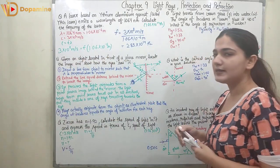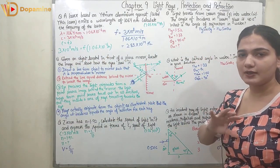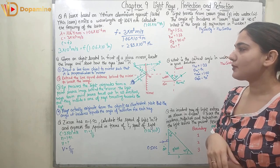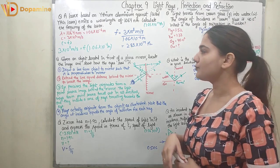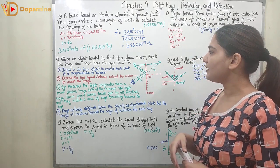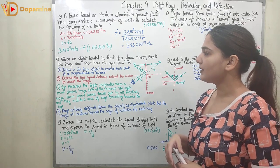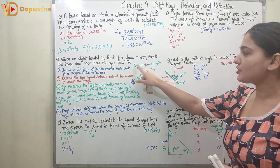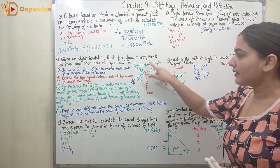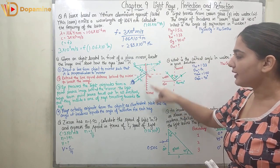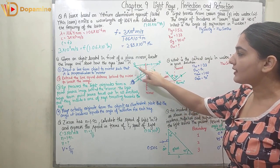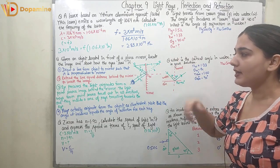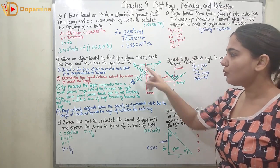Coming to the next question: given an object located in front of a plane mirror, locate the image and show how the eye sees it. So here is my object, here is my eye, and here is the mirror. We have to show how the object is seen inside the mirror.